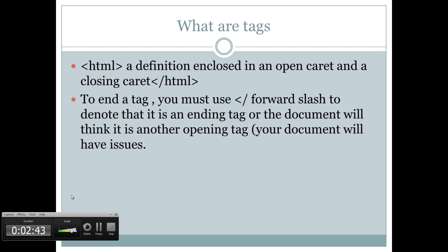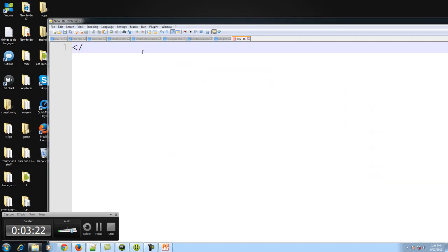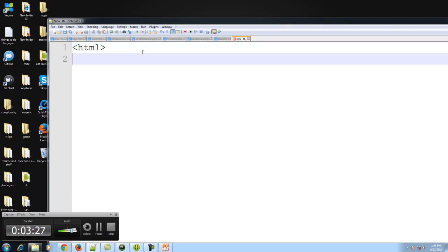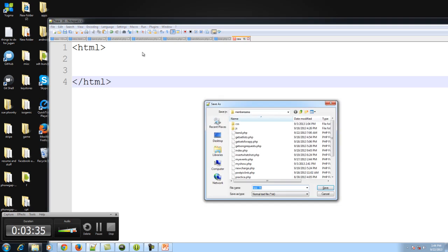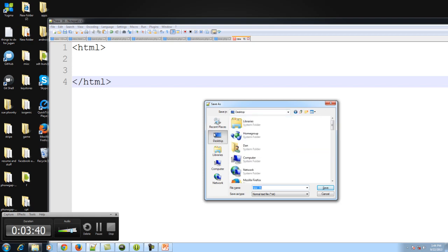HTML is a definition of tags enclosed in opening and closing HTML tags. We open and close them. To open a tag, you declare it whether it's the HTML element, div, or a list item. To close an HTML tag, we open the caret and use a forward slash to denote that we're closing that HTML element. Make sure you use a forward slash to close your HTML element, otherwise the document thinks you're creating a new one.